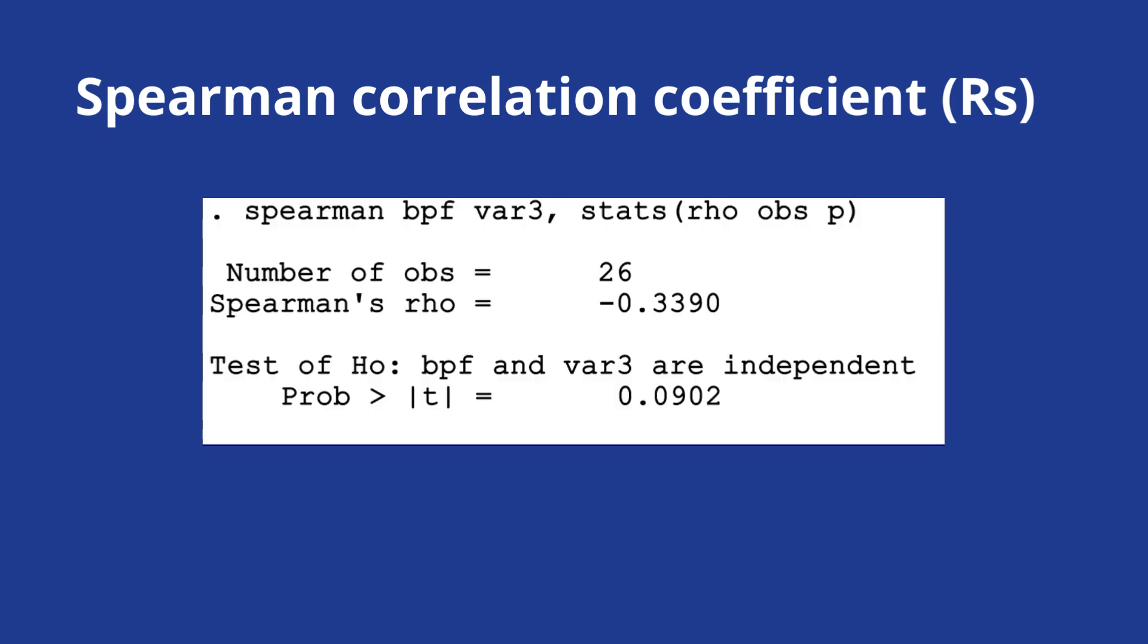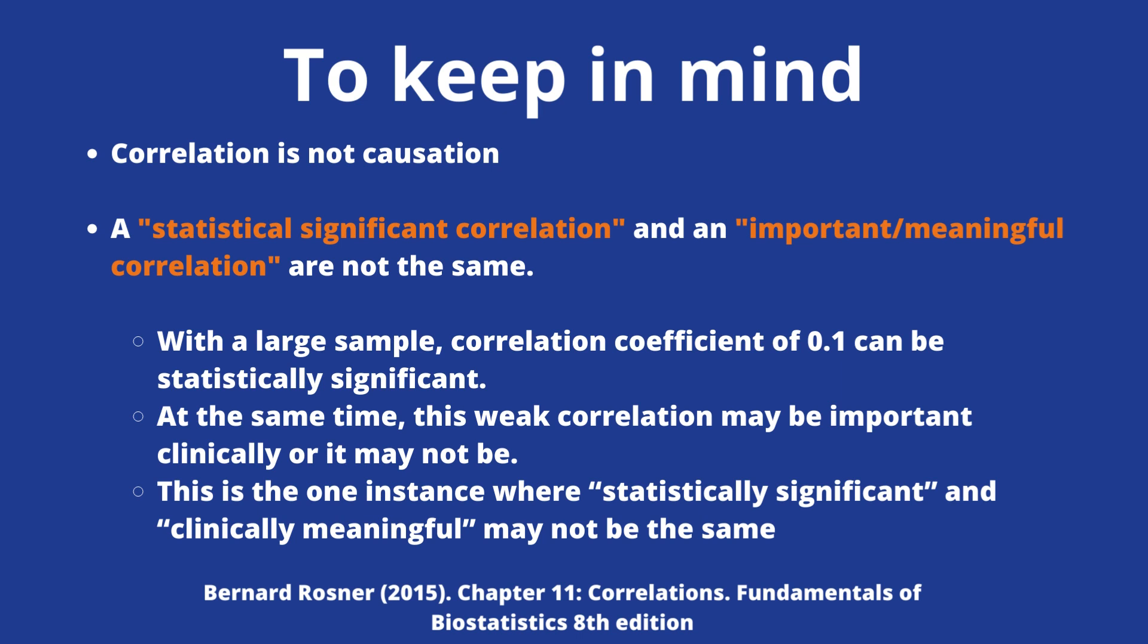In the case of this Stata output, it's going to be easier to understand, as you can see here. And the Spearman rho is going to be the coefficient. And the probability is going to be the p-value. You need to keep in mind these concepts.